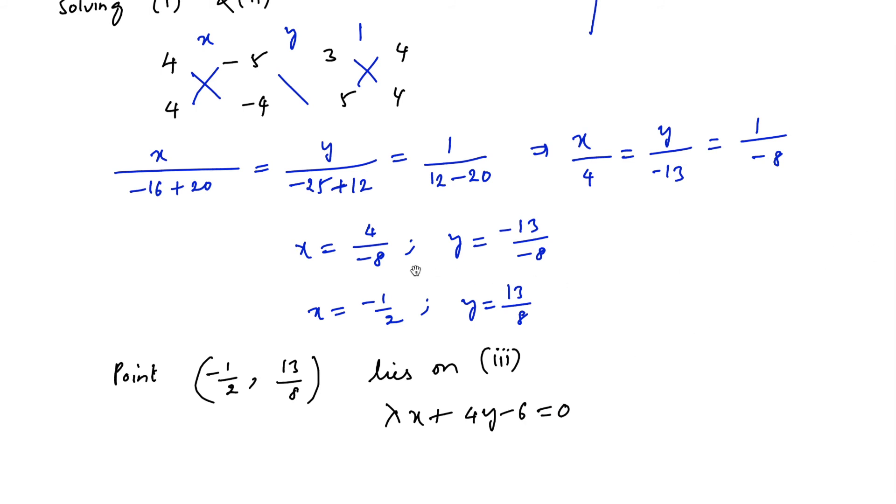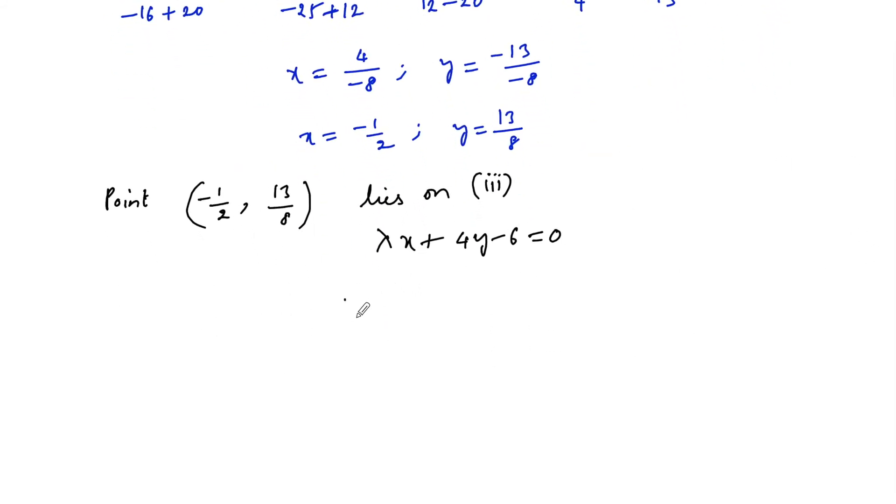Let us substitute this point to find the value of lambda. Lambda into minus 1 by 2 plus 4 times 13 upon 8 minus 6 equals 0. That is minus lambda upon 2 plus 13 upon 2 minus 6 equals 0. Lambda upon 2 equals 13 by 2 minus 12 by 2, that is 1 by 2. So lambda equals 1.